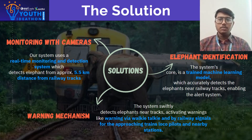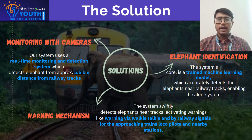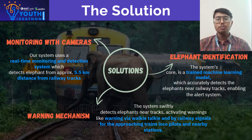The system utilizes a trained machine learning model to detect elephants near railway tracks from up to 5.5 km away, providing real-time warnings through walkie-talkies and railway signals to alert drivers and nearby trains. Additionally, the system collects data on elephant behavior in the corridor, allowing detailed analysis of their patterns and movements to improve safety and management.